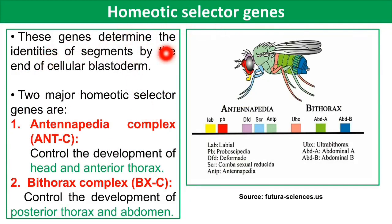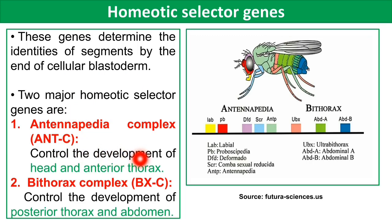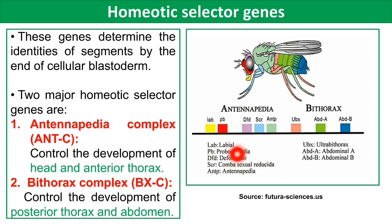The third type of pattern regulating gene is homeotic selector genes. These genes determine the identities of segments by the end of the cellular blastoderm stage. Two major homeotic gene complexes are: first, the Antennapedia complex, which controls development of the head and anterior thorax; second, the Bithorax complex, which controls development of the posterior thorax and abdomen. Genes in the Antennapedia complex include labial, proboscipedia, deformed, sex combs reduced, and Antennapedia. Genes in the Bithorax complex include Ultrabithorax, abdominal-A, and Abdominal-B.